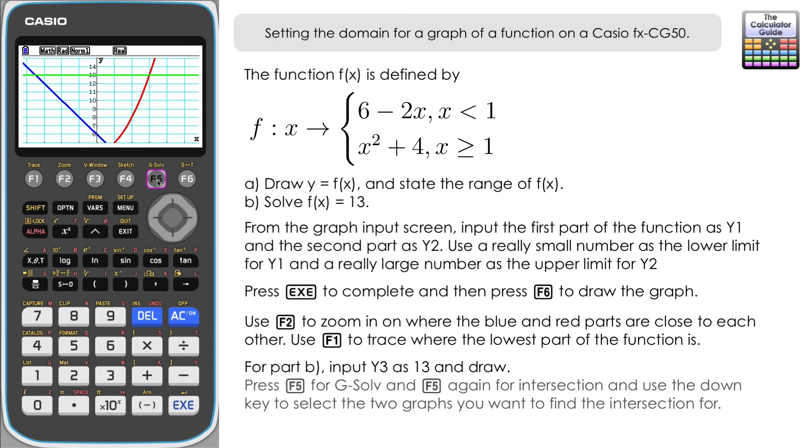So G-Solve, we need to select which graphs we're going to intersect. So we do want the blue piece here and then while the blue and red don't intersect so we need to press down and select the green. That's what we're interested in and here we have our coordinates of our intersection point. y equals 13 obviously and x equals minus 3.5. So we know that when x equals minus 3.5, y equals 13. So that is one of our solutions.